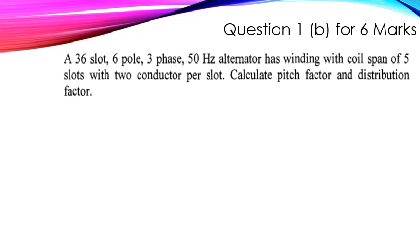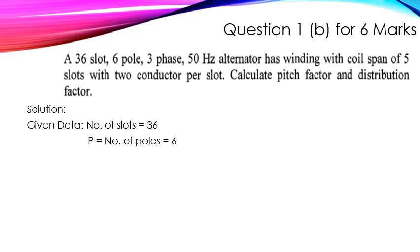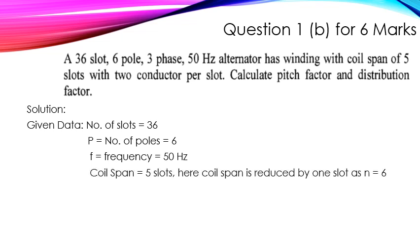The question is: a 36-slot, 6-pole, 3-phase, 50 Hz alternator has a winding with coil span of 5 slots with 2 conductors per slot. Calculate the pitch factor and distribution factor. The given data: number of slots = 36, number of poles P = 6, frequency = 50 Hz, coil span = 5 slots. The coil span is the distance between the two coil sides of a complete coil of a winding. Number of slots per pole = 36 / 6 = 6.